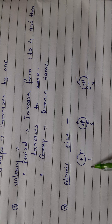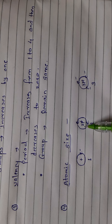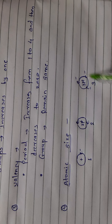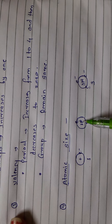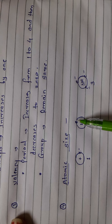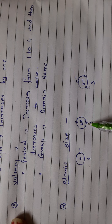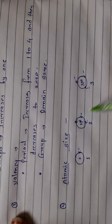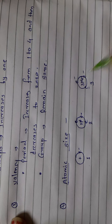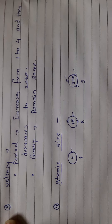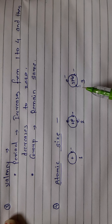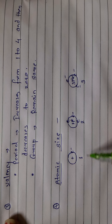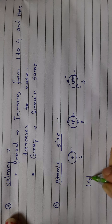So as atomic number increases, the number of protons and electrons also increases by one, so that the force of attraction between the positively charged nucleus and the negative electrons also increases. The nucleus pulls the outermost shell towards itself, and hence atomic size decreases. So as we move from left to right in a period of the modern periodic table, the atomic size decreases.